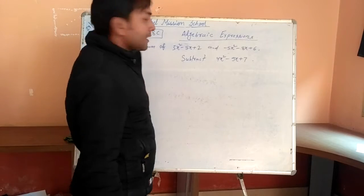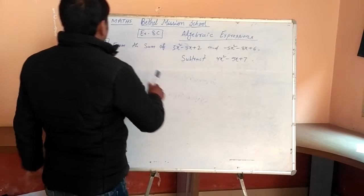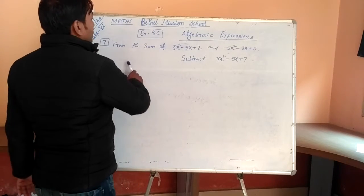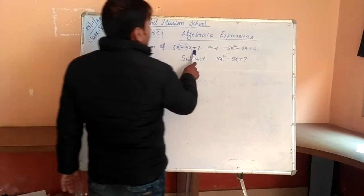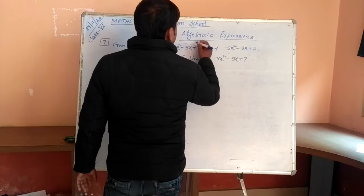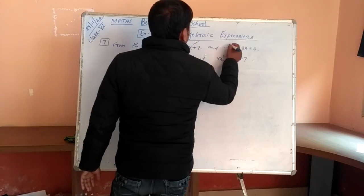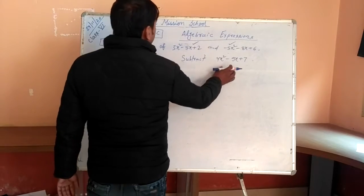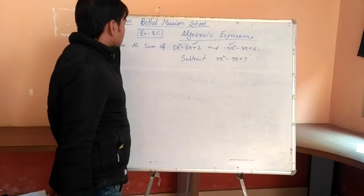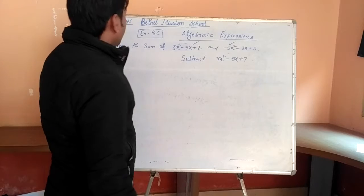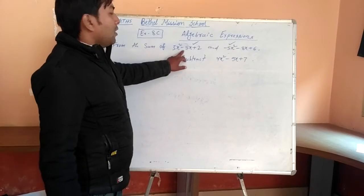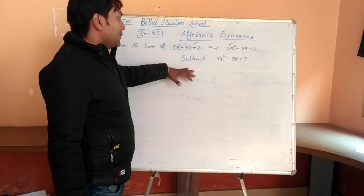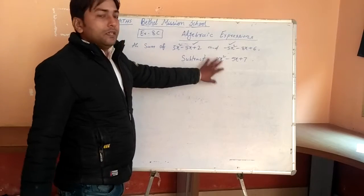It is an example. Now, question 7 says that from the sum of this and this, you have to subtract this one. From the sum of this and this, subtract this one.